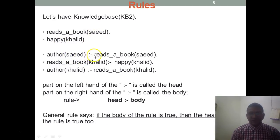Then we have author(saeed) :- reads_a_book(saeed). We are using this sign colon followed by a hyphen sign. So basically when we talk of rules, we have two parts: one is the left hand side and one is the right hand side. The left hand side part is called the head of the rule, and the right hand side is called the body. The general rule says that if the body is true, then head is assumed to be true. And how can we read this? We read this: Saeed is the author if Saeed reads the book. Khalid reads the book if Khalid is happy. This is how we can represent the rules.